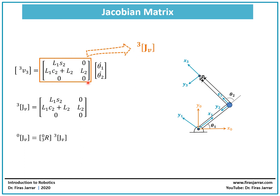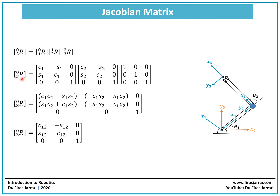The Jacobian is the part relating linear velocity to joint rates, but it is currently expressed in frame 3. If we want to express it in frame 0, this can be done by pre-multiplying the Jacobian matrix by the rotation matrix that maps from one frame to another — a 3x3 matrix — giving a 3x2 result which is the Jacobian in frame 0. The rotation matrix of frame 3 with respect to frame 0 was obtained previously in the forward kinematics: it is R1-to-0 times R2-to-1 times R3-to-2.